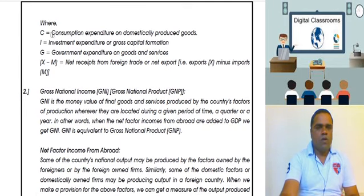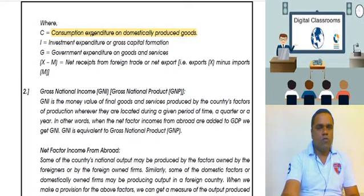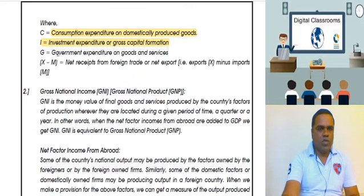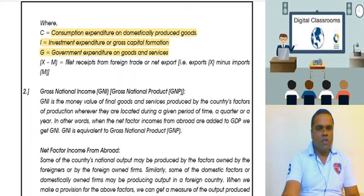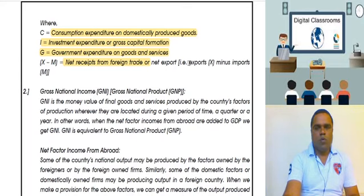C stands for consumption — how much goods our country's people consume. I stands for investment, which is like capital formation. G stands for government expenditure on goods and services. X and M stand for net receipts from foreign trade, that is exports minus imports.